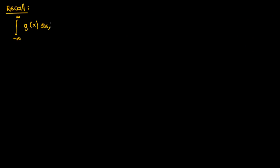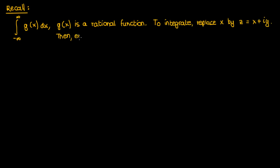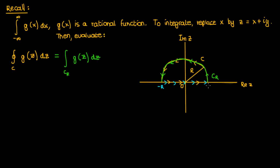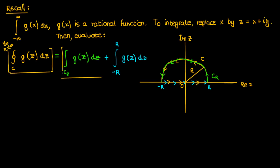Let's start by recalling the manner by which we integrated improper integrals in a previous video — the link is in the description. In that video the functions we were integrating were rational expressions which didn't involve sine and cosine. What we did was replace x by the complex variable z and then perform a contour integral over the closed contour c enclosing a semicircular area in the complex plane. This closed contour integral equals the contour integral over the semicircular arc c_r plus the integral over the line segment on the real axis. We calculated the improper integral by computing these two contour integrals in terms of radius R, taking the limit as R approached infinity, and then isolating the integral over the real axis.